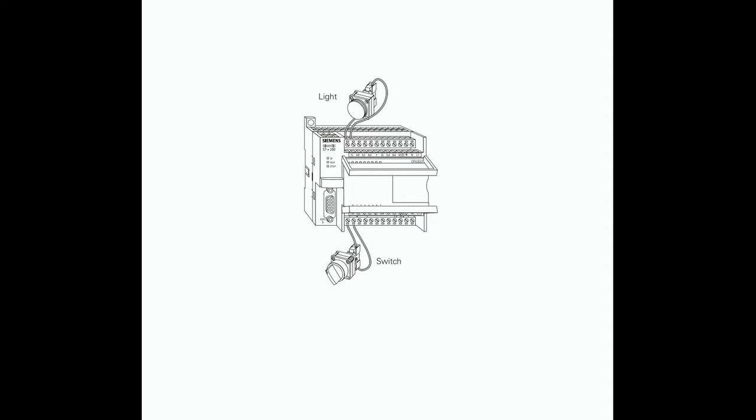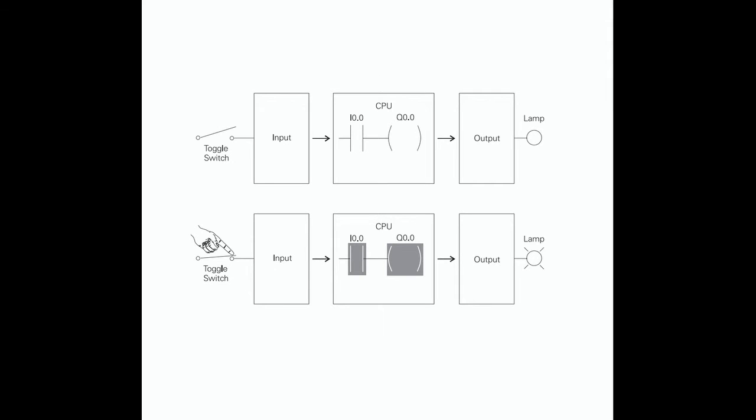Wiring: To accomplish this task, a switch is wired to the input of the PLC and an indicator light is wired to the output terminal. The following drawing illustrates the sequence of events. A switch is wired to the input module of the PLC and a lamp is wired to the output module. The program is in the CPU. The CPU scans the inputs. When it finds the switch open, I0.0 receives a binary 0, instructing Q0.0 to send a binary 0 to the output module and the lamp is off. When it finds the switch closed, I0.0 receives a binary 1, instructing Q0.0 to send a binary 1 to the output module, turning on the lamp.